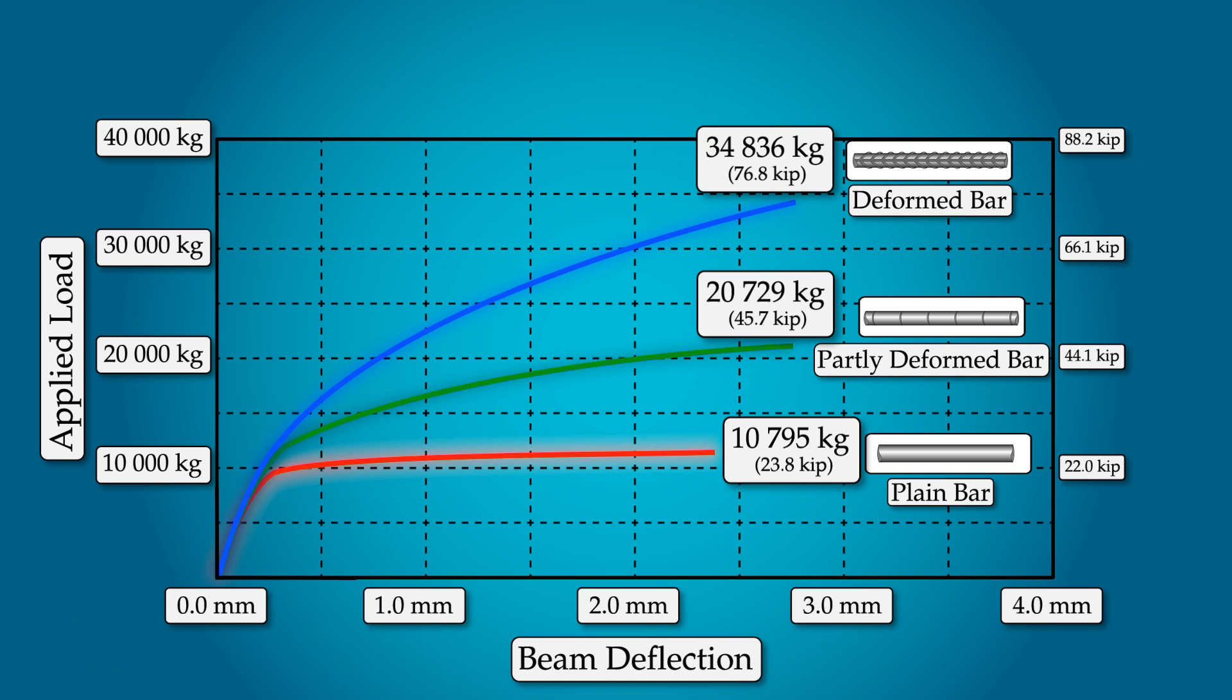These findings were astonishing. Small little bumps on your reinforcement can more than triple the strength of your concrete beam. Note that these numbers would differ for different loading scenarios, but in general, the deformed rebar blows the plane rebar out of the water in almost all cases.